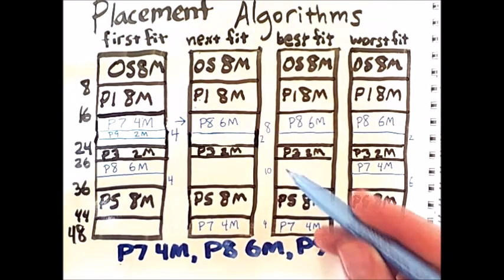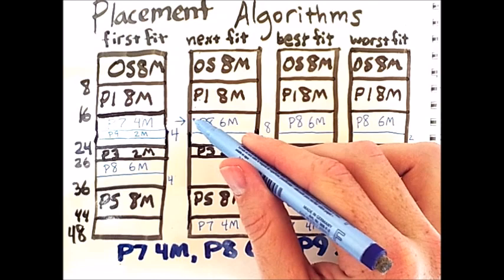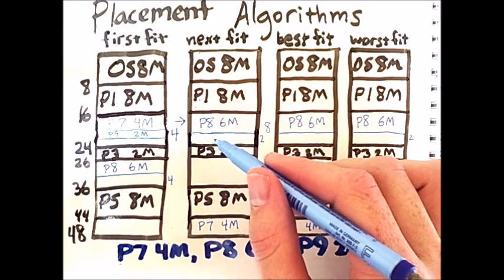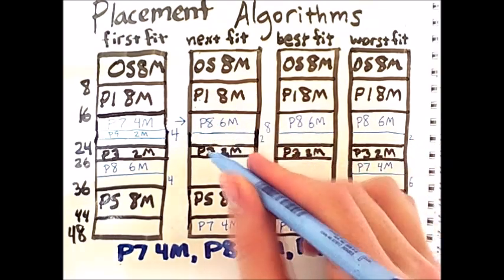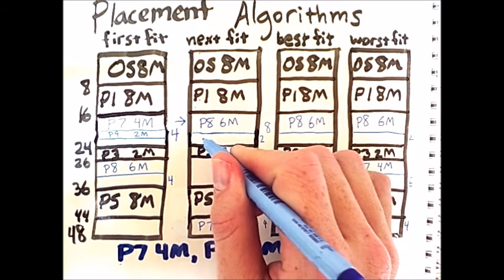Next fit starts its search from the previous allocation point, but it immediately finds a 2 megabyte slot for process 9 right here.